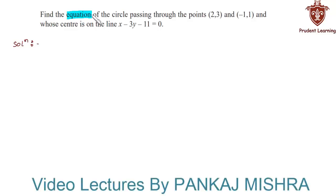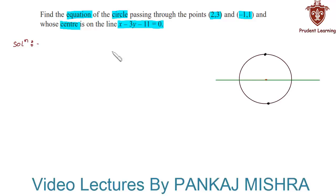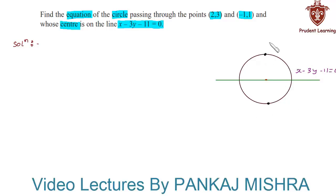Find the equation of the circle passing through the points and whose center is on the line x minus 3y minus 11 equals to 0. Here we have a circle whose center is on the line x minus 3y minus 11 equals to 0, and this circle passes through two points.